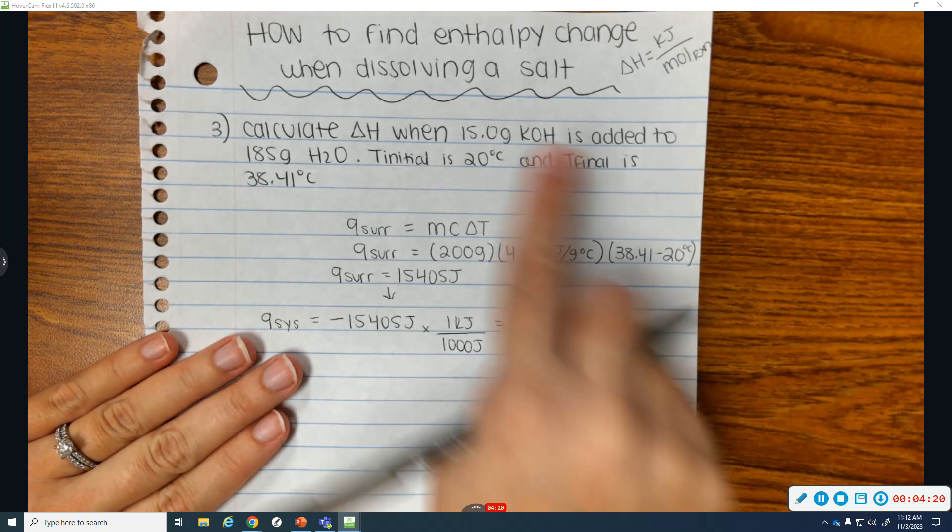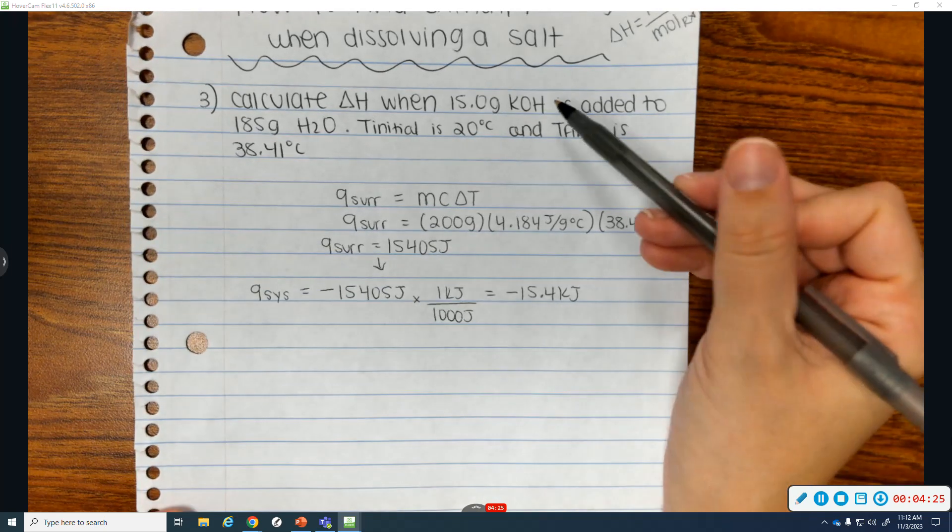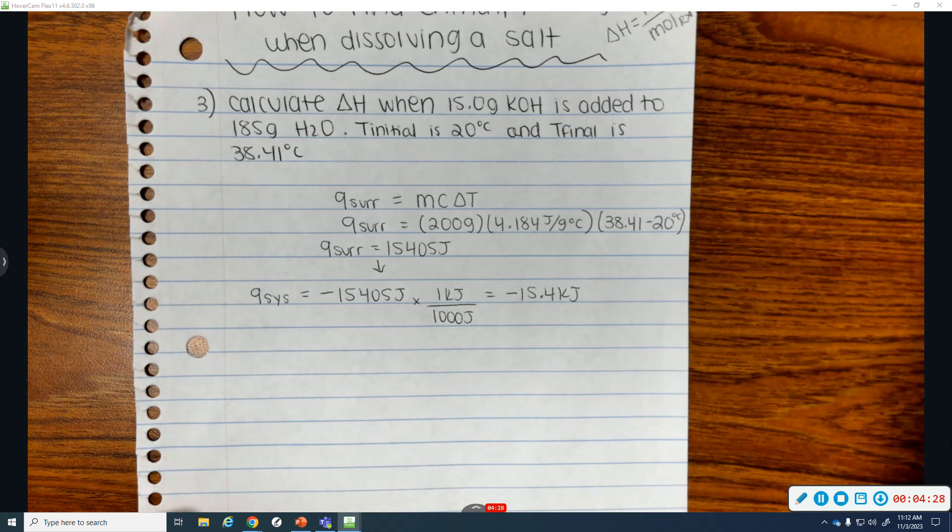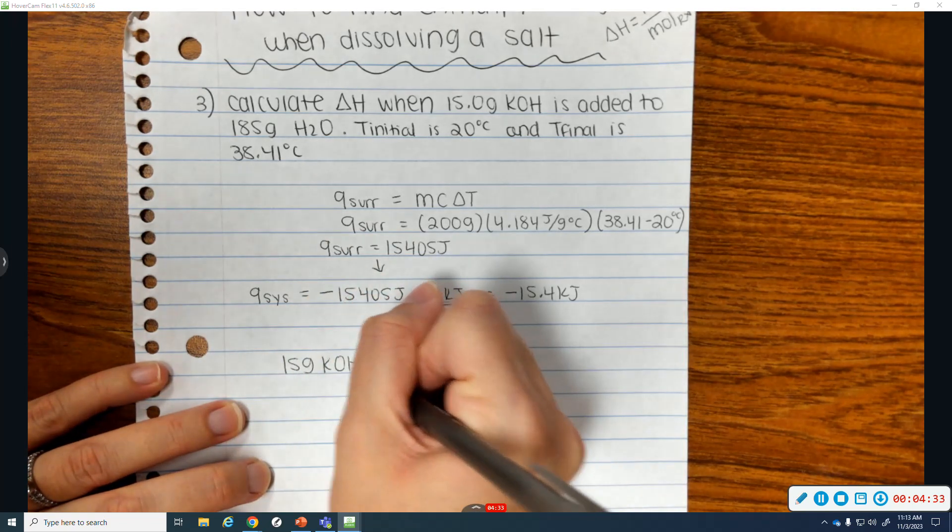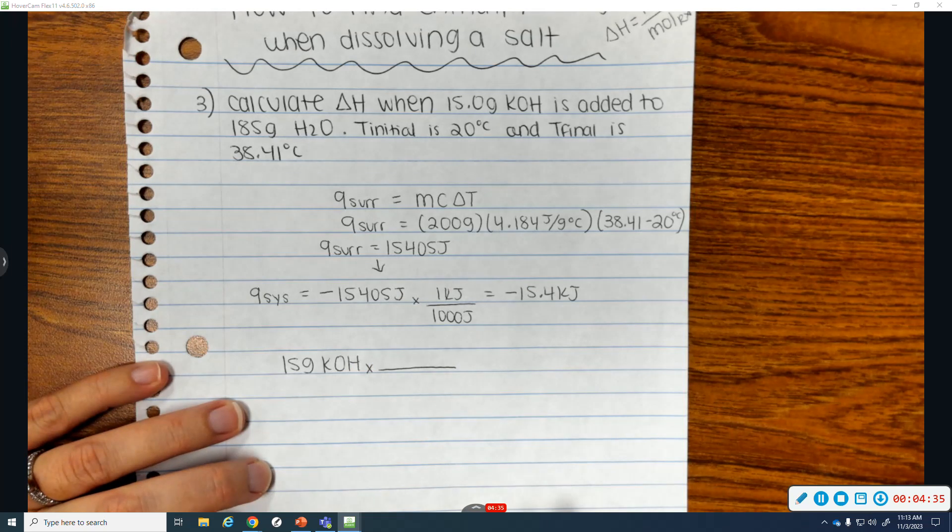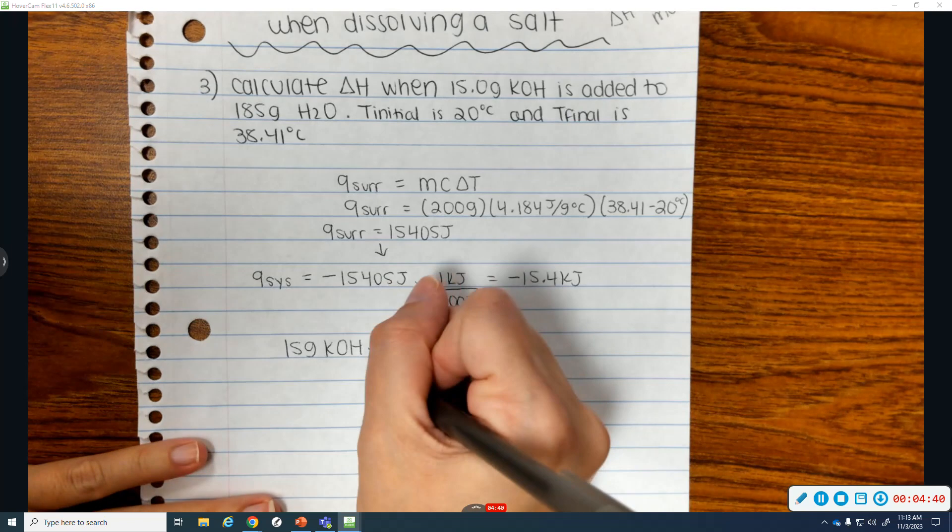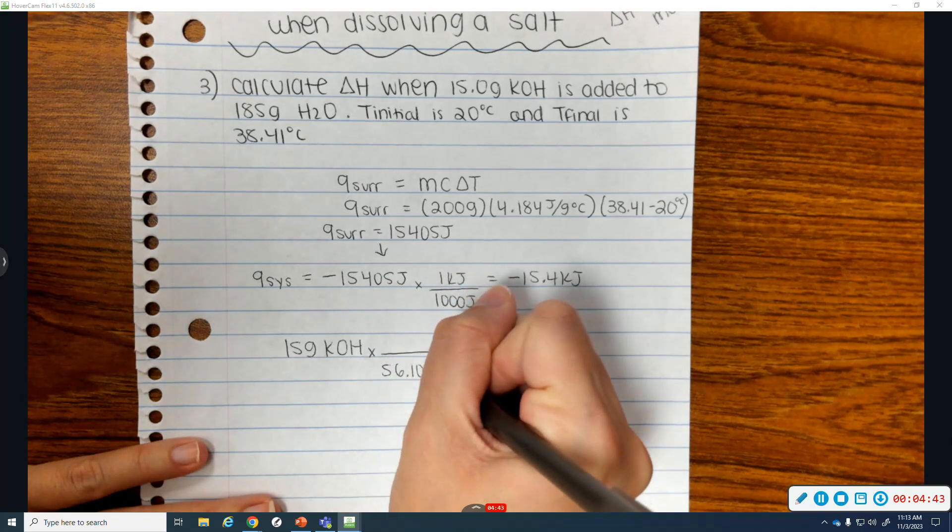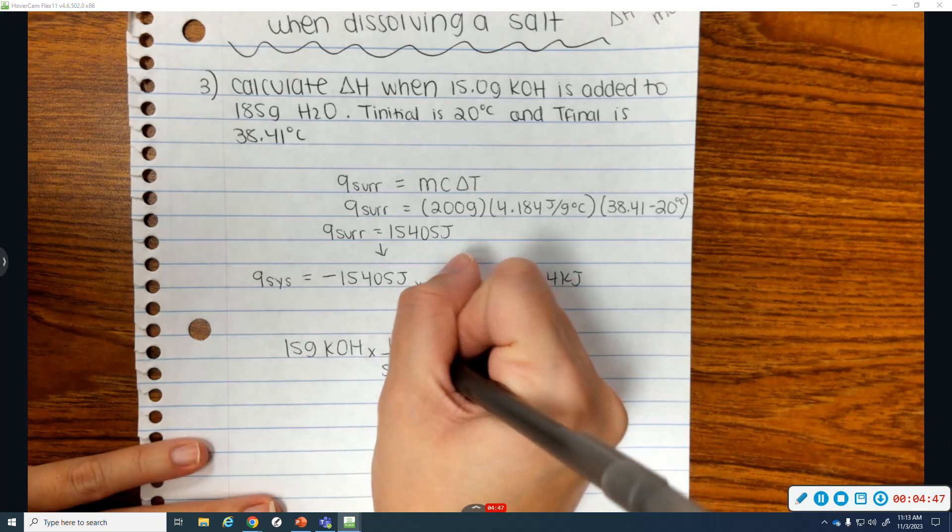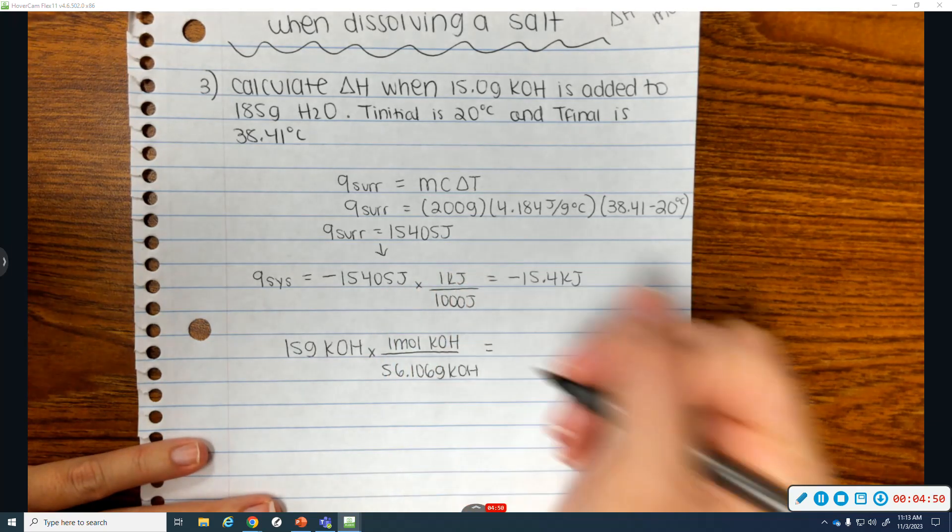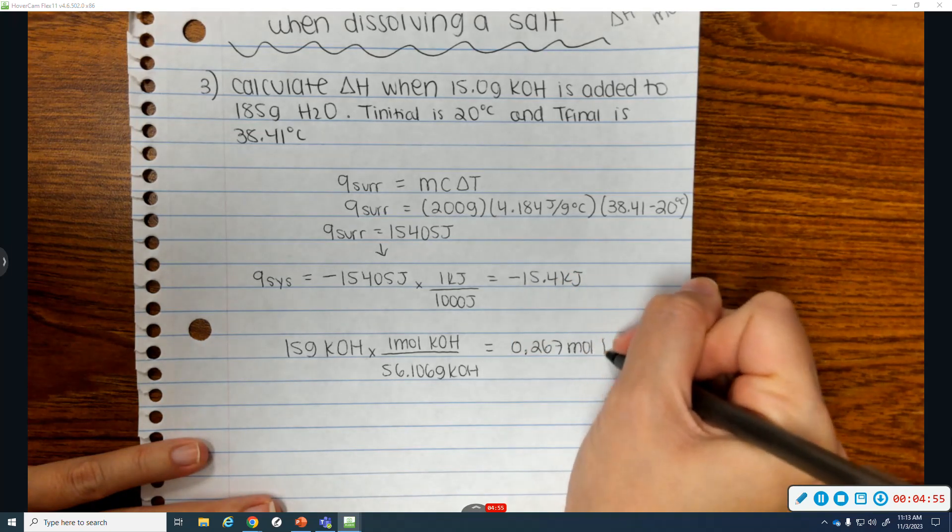Now, this is grams of KOH. And again, it's not like combined grams to get your moles, because it's the moles of what's dissolving, which is my KOH. So 15 grams KOH. You have to go to your periodic table and find the molar mass of KOH. It is 56.106 grams of KOH are in one mole. There are 0.267 moles of KOH.